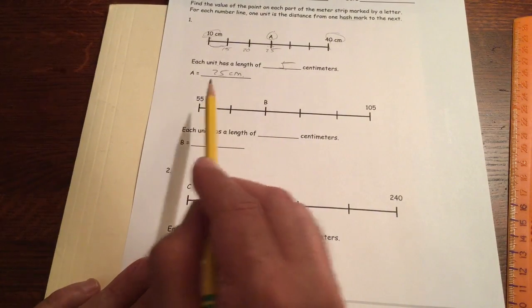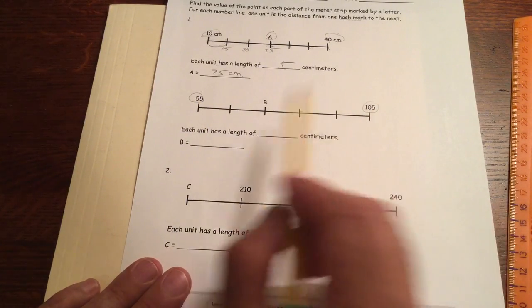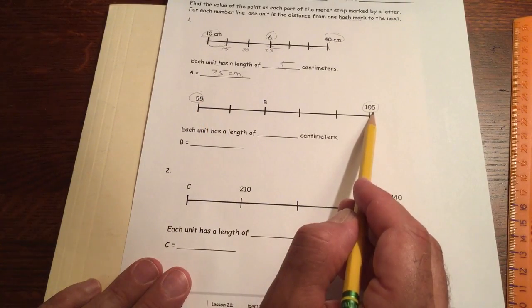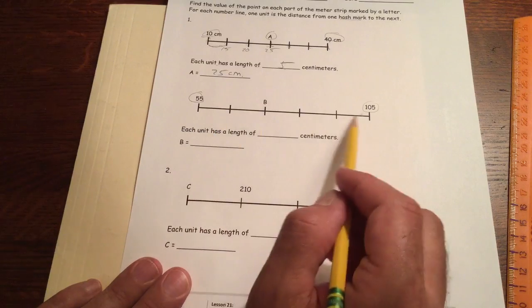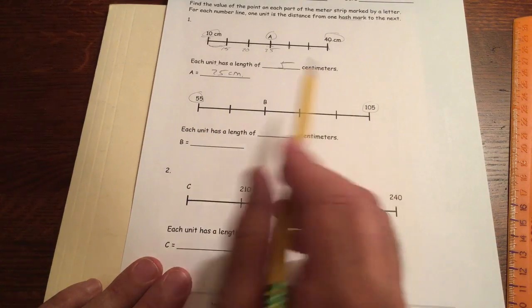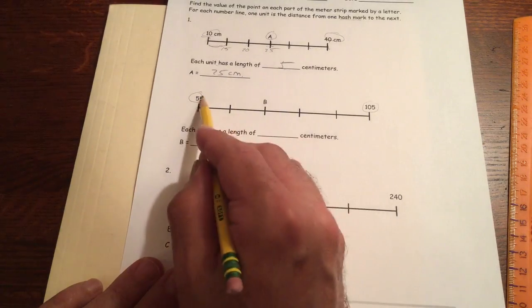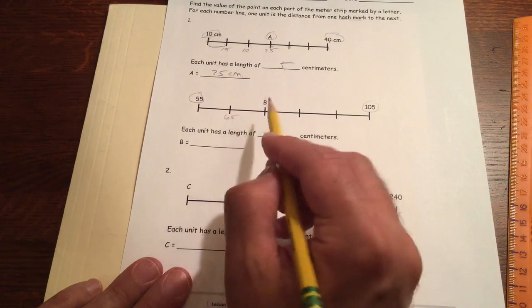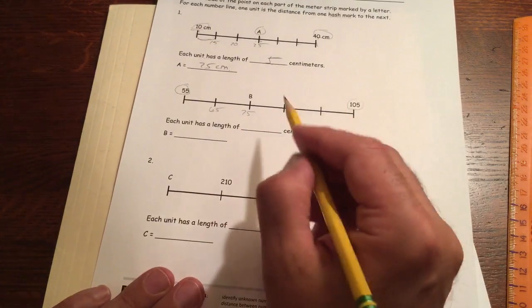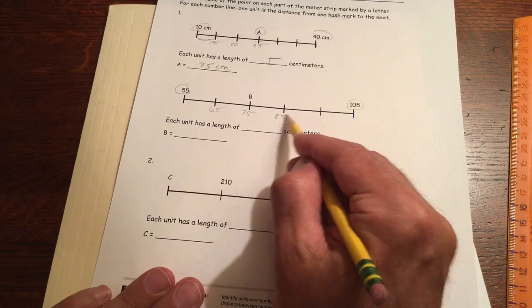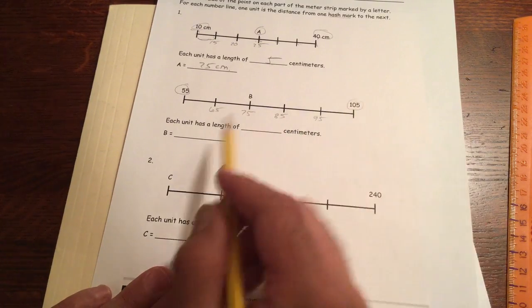For this, we have a number line that starts at 55 and ends at 105. That's a lot of room in between the two. I don't think fives are going to get us all the way to 105 from there. I think maybe tens might work. Let's see if tens work. It'll be 55, 65, 75. I'm just guessing in pencil. I can erase it if it doesn't work out. 85, 95, and then 105 would be next, so tens work.